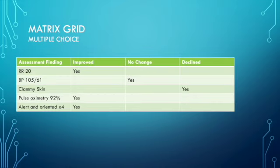In this option, you are looking at assessment findings and based on the patient scenario, you're selecting whether they are improved, no change, or declined. For example, say the respiratory rate was 32. Now you address the problem and the respiratory rate is 20. So yes, they have improved based on that.